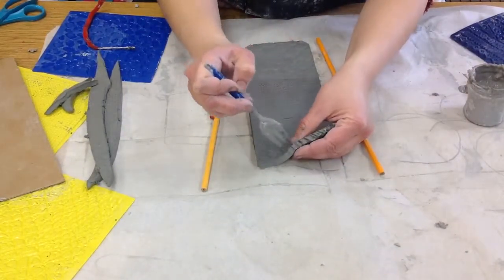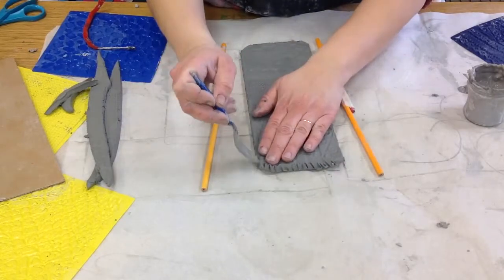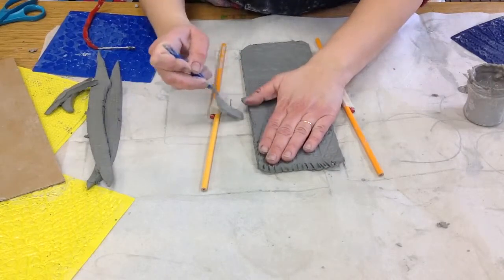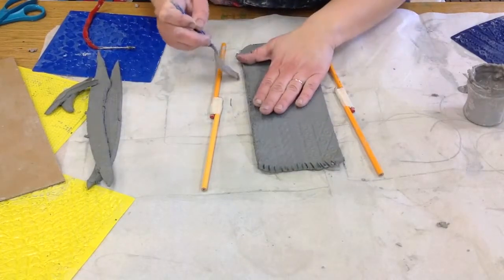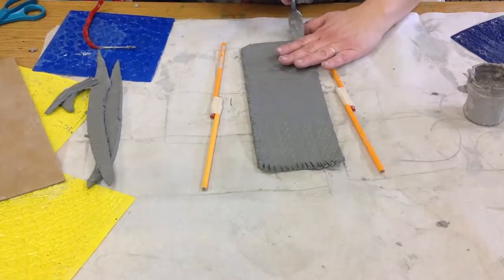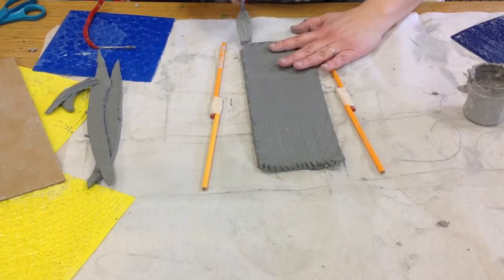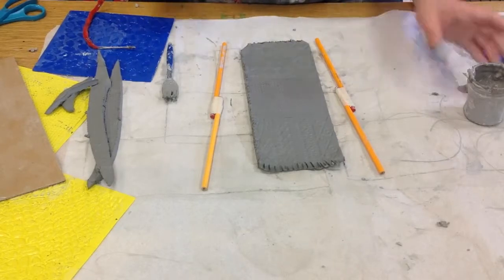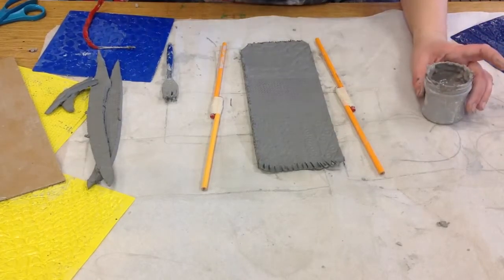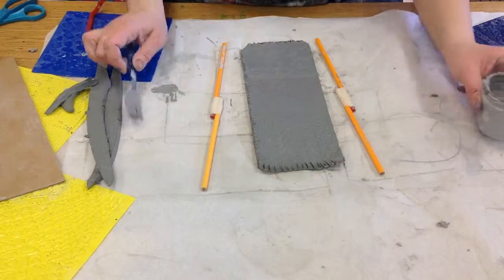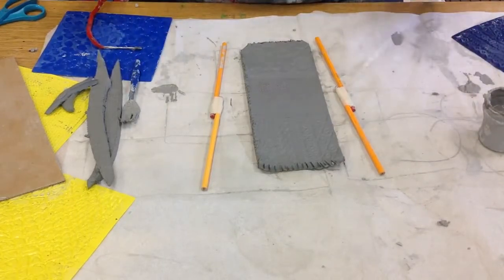And we're going to score it on three sides. The sides and the bottom, but not the top. We don't want score marks on the top because we are going to be drinking from these and we don't want it to be on the lip of the cup.